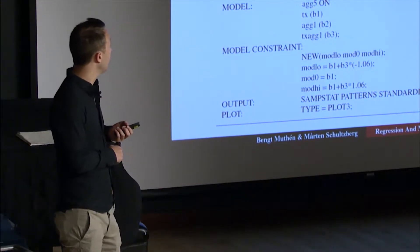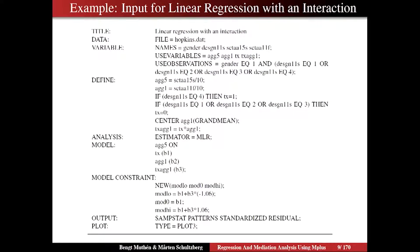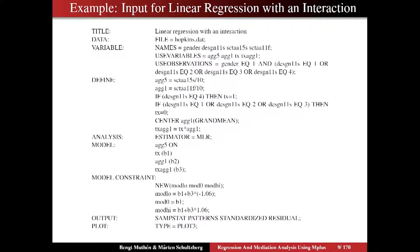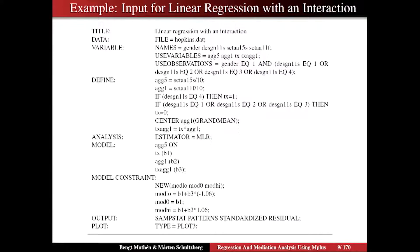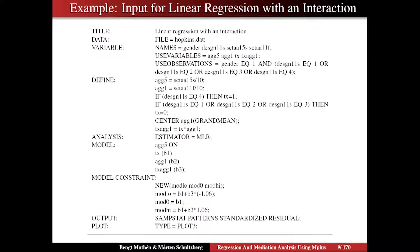We start with the title command, and the command is always followed by a colon. This is just a name for the analysis — the name you will have on all the outputs, to keep track of what you have if you have a lot of output files. Then we have the data command, in which we use the file option. FILE is Mplus syntax, so it's in capital letters. Hopkins.dat is just the data file. We say FILE equals Hopkins.dat, meaning we're going to use a data file called Hopkins.dat. It's implied that this file is in the same folder as the input because we haven't specified any path.